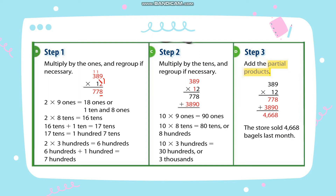2 multiplied by 8 is 16, plus 1 is 17, so write 7 and regroup 1. 3 multiplied by 2 is 6, plus 1 is 7. So the first partial product is 778. Before multiplying the second digit, put 0 first because 1 is in the tens place, so the answer must be in the tens place. 1 multiplied by 9 is 9, 1 multiplied by 8 is 8, and 1 multiplied by 3 is 3. Then add all the partial products: 8 plus 0 is 8, 7 plus 9 is 16, regroup 1. 7 plus 1 is 8, plus 8 is 16, regroup 1, so 1 plus 3 is 4. The store sold 4,668 bagels last month.